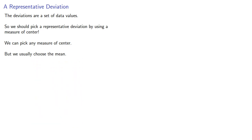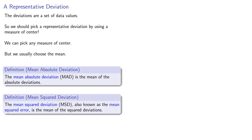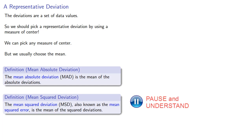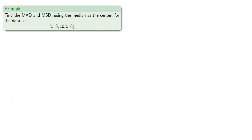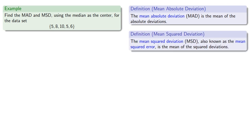This gives us two more important ideas. The mean absolute deviation (MAD) is the mean of the absolute deviations. And the mean squared deviation (MSD), also known as the mean squared error, is the mean of the squared deviations. Let's find the MAD and MSD using the median as the center for our data set.